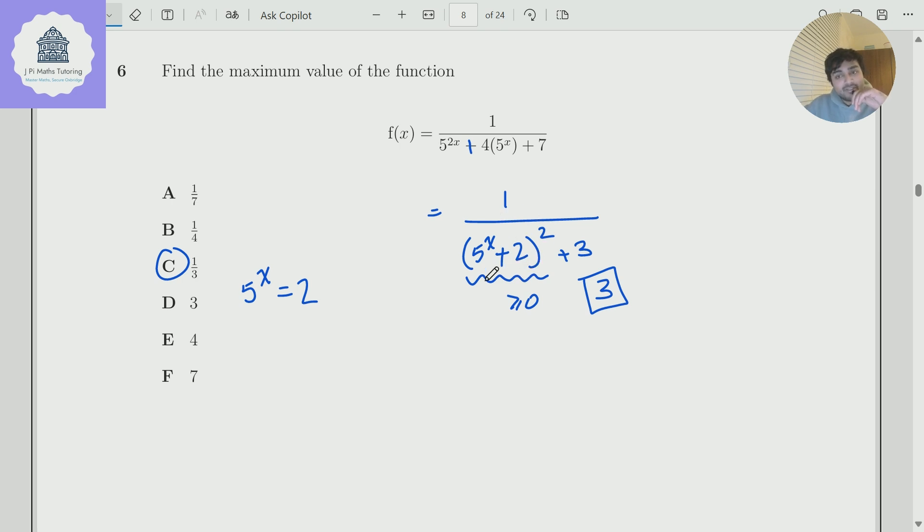Because 5 to the x plus 2 is at least 0. Sorry, it's going to be at least 2. In fact, it's going to be strictly bigger than 2. So in fact the maximum here, if this was the case, well it can't actually be attained. But it would be when 5 to the x plus 2 is equal to 2, which can't really be attained. So let's just say it's bigger than 2 for all values of x.